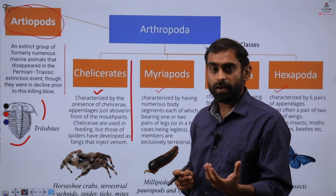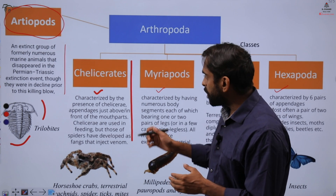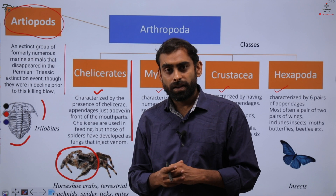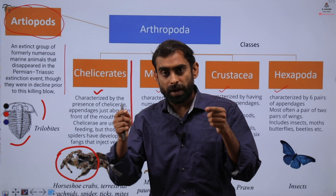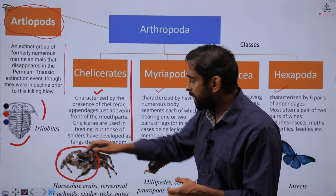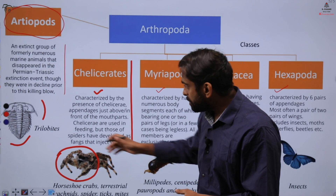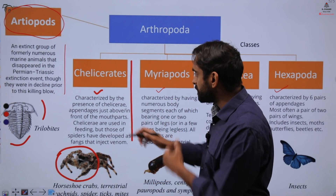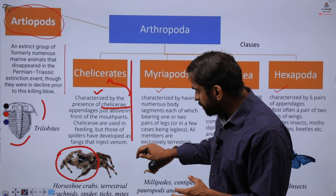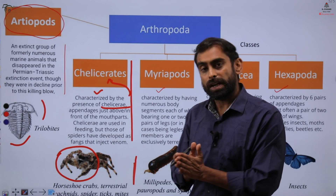The first class is Chelicerates. In this group, apart from the standard arthropod characters, one pair of appendages is modified into specialized mouth parts called chelicerae. If you have observed spiders or scorpions, their mouth parts are specialized toward the front and in some cases develop into fangs. All ticks, mites, spiders, and scorpions belong to this group of chelicerates.